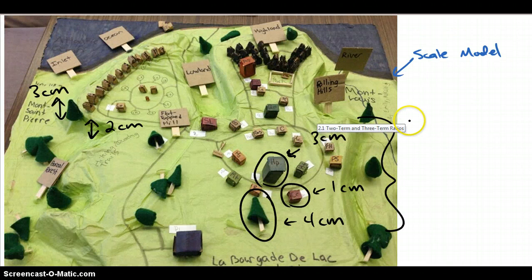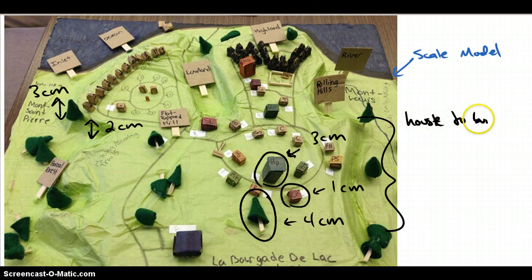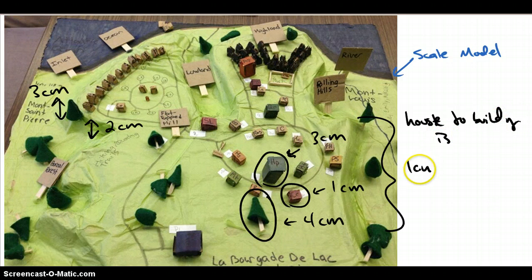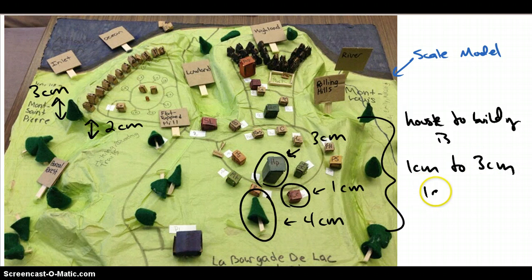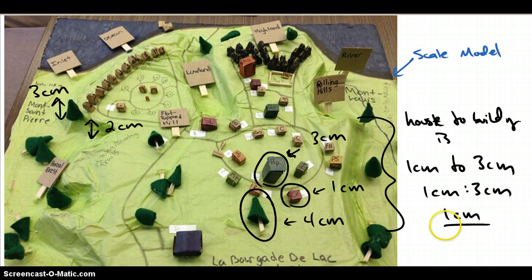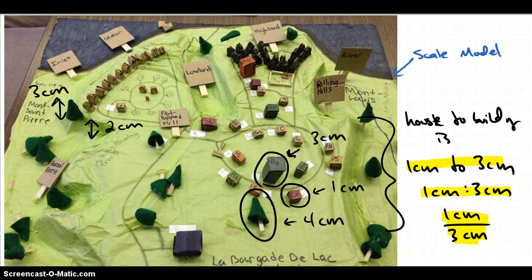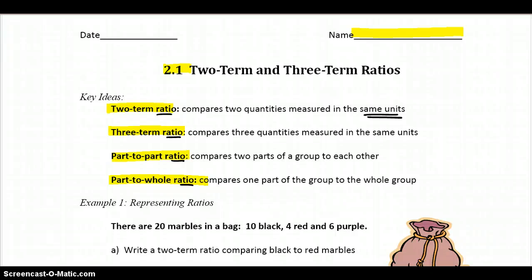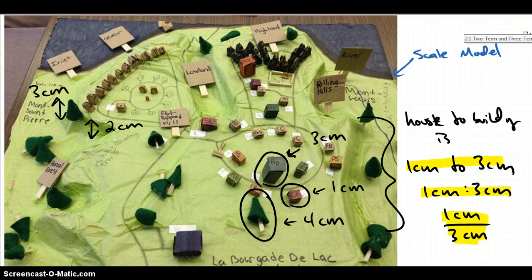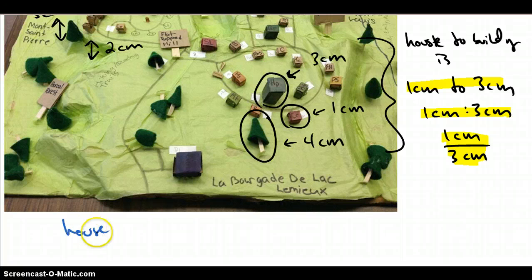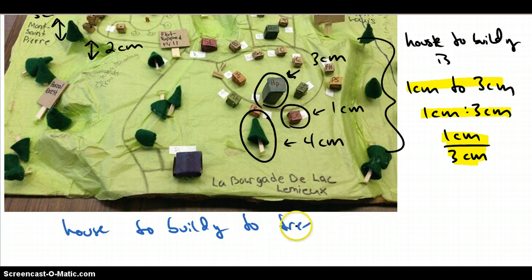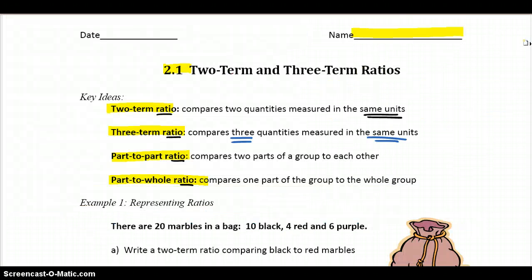Two term ratios would compare two quantities measured in the same units. So for example, we could come back here and we could say house to building is 1 centimeter to 3 centimeters. Actually, our ratio notation can look a few different ways. We might write it like this. It's 1 centimeter to 3 centimeters. Or we might say it's 1 centimeter colon 3 centimeters. And any of those notations are acceptable ratio notations. Using the word to, using the colon, or using the fraction notation there.